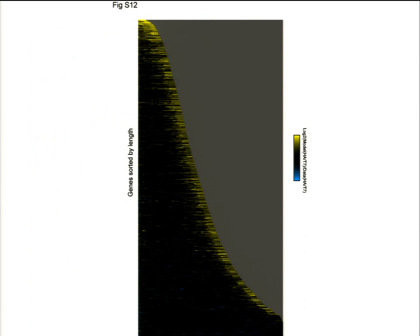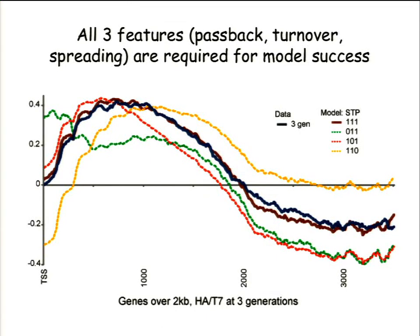We do poorly at the 3' ends of genes because we model each gene in isolation and don't let nucleosomes move between genes. All three model components are needed. If we don't allow nucleosomes to spread out, over multiple generations all the histones walk off the cliff at the 5' end. The little 5' gradient is analogous to an active transport plus diffusion steady state — transcription-related pass-back is the active transport, and spreading during replication is the diffusion.